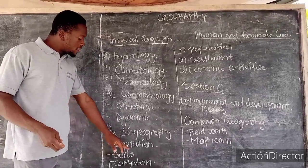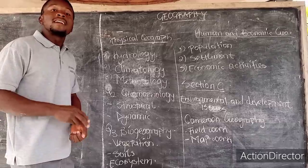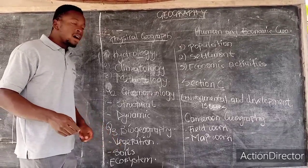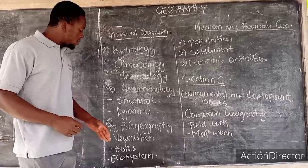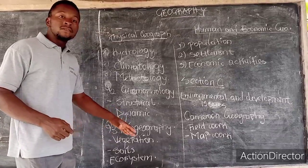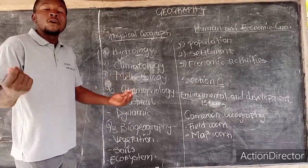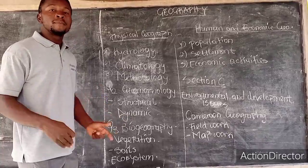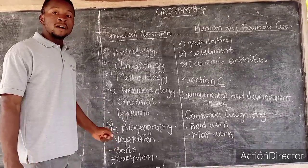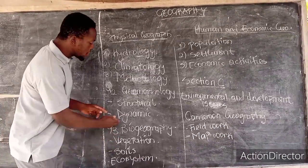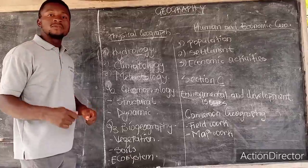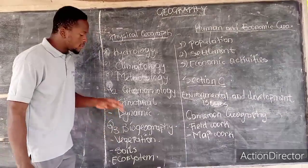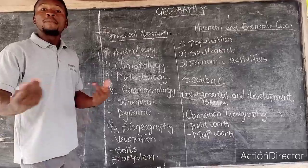If you find geomorphology very difficult, you can go to biogeography. In biogeography we have vegetation, soil, and ecosystem — those are the three topics you can study under biogeography. If you have already worked on those three topics and are revising them, you are already prepared for both geomorphology and biogeography, giving you two questions covered for Advanced Level 2021.